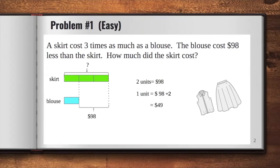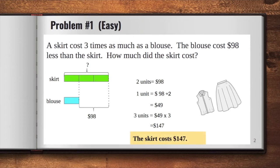And we will get this answer. Now, remember, we are looking for the skirt. So three units is equal to $49 times three, and this will give us $147. Therefore, the skirt cost $147. Let's try solving another problem.